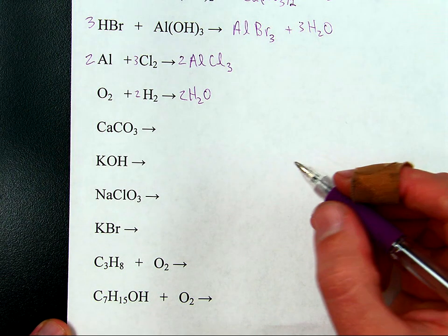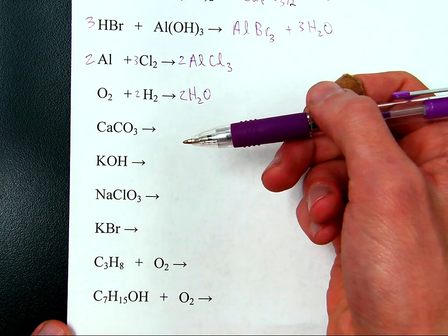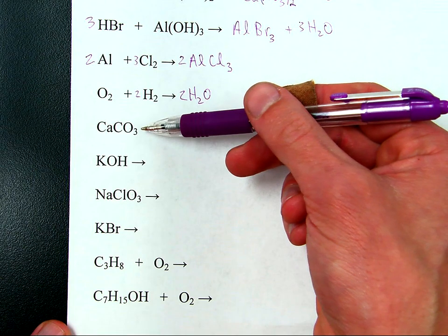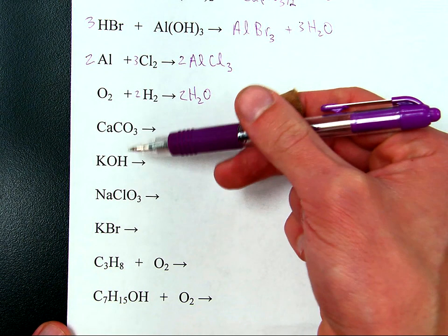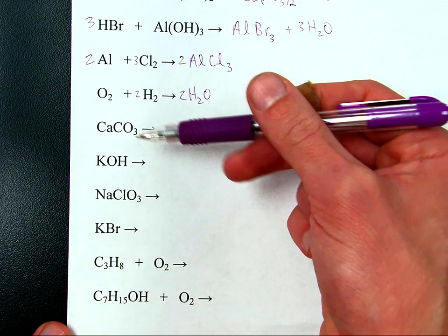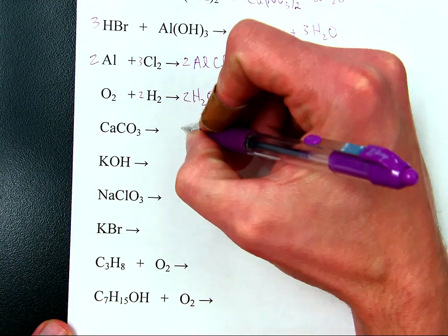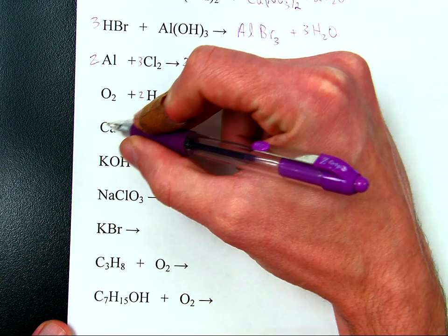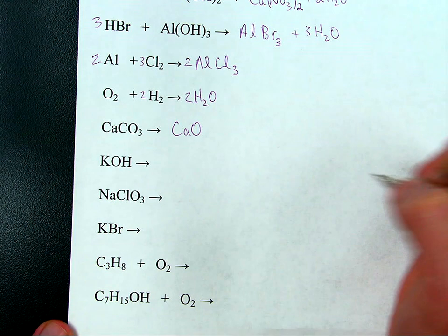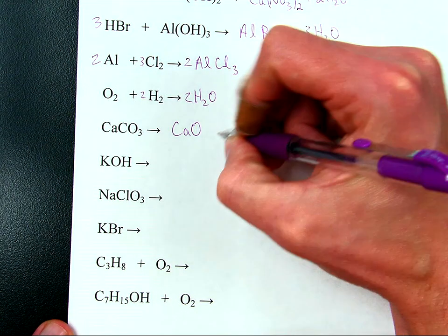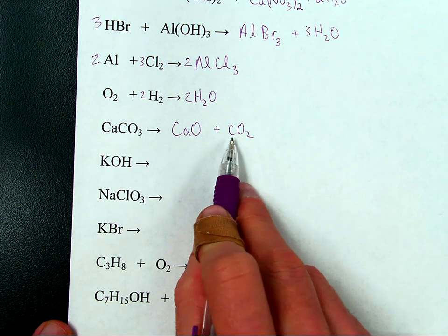There's only one reactant for each of these, so that tells me it's a decomposition right away — that's the only kind of reaction with one reactant. The first three are special ones you have to memorize. Calcium carbonate: all carbonates decompose to a metal oxide and carbon dioxide gas. In this case the metal is calcium, giving calcium oxide (CaO) plus CO2. One calcium, one calcium. Three oxygens, three oxygens. One carbon, one carbon. Balanced as written.